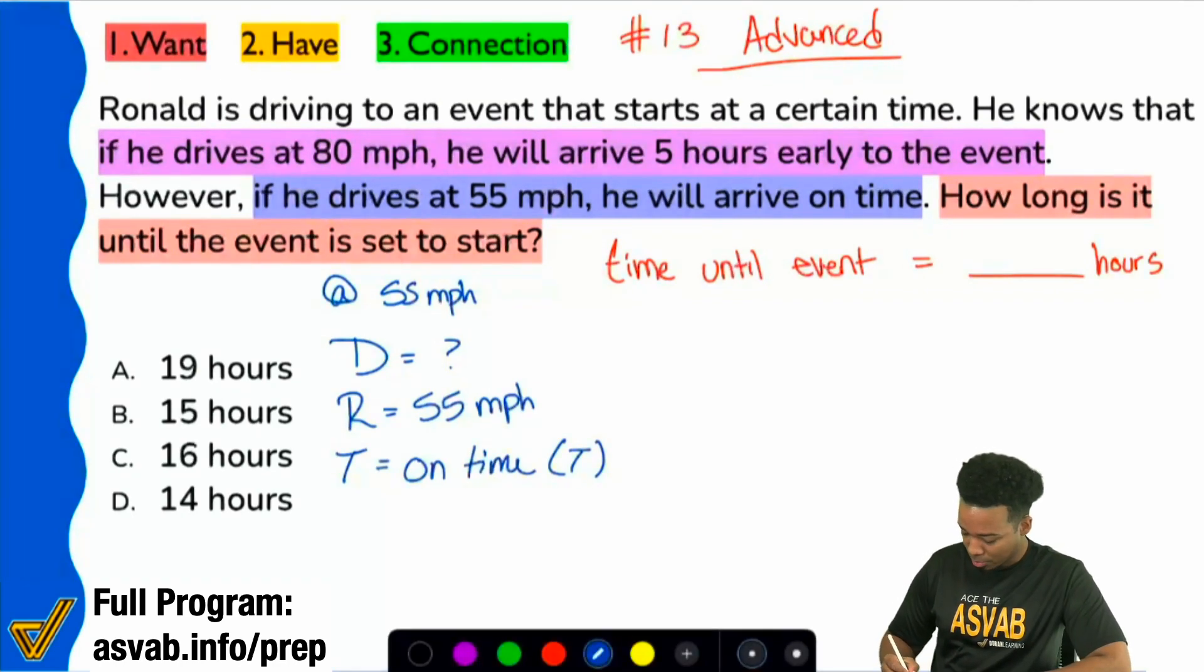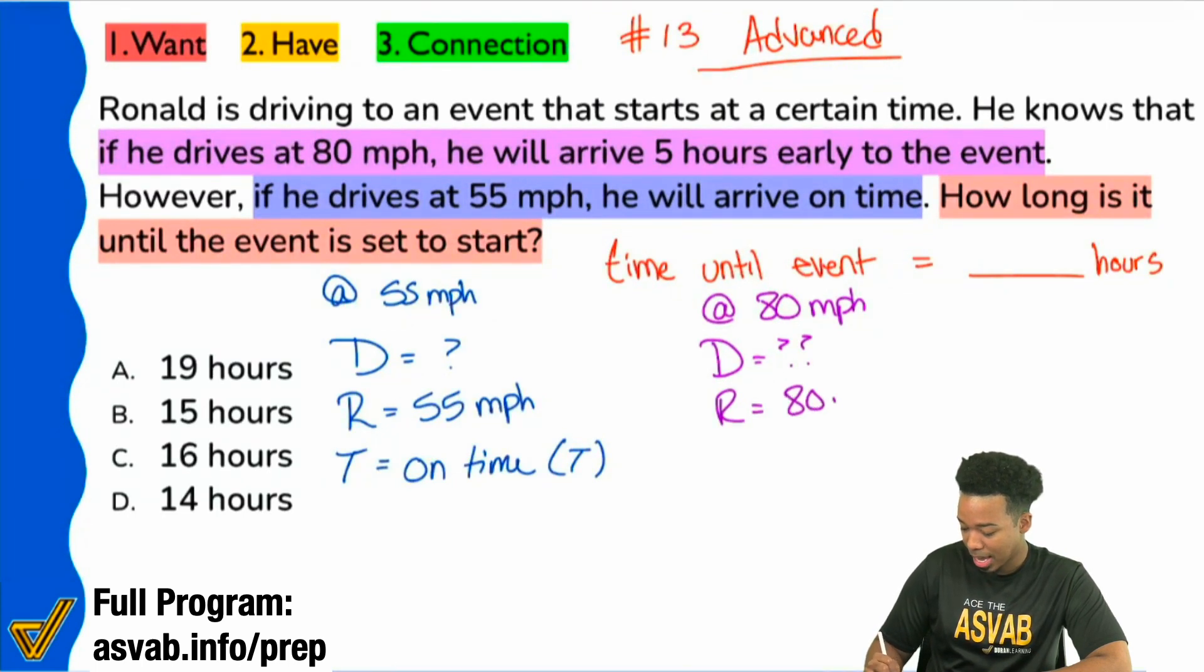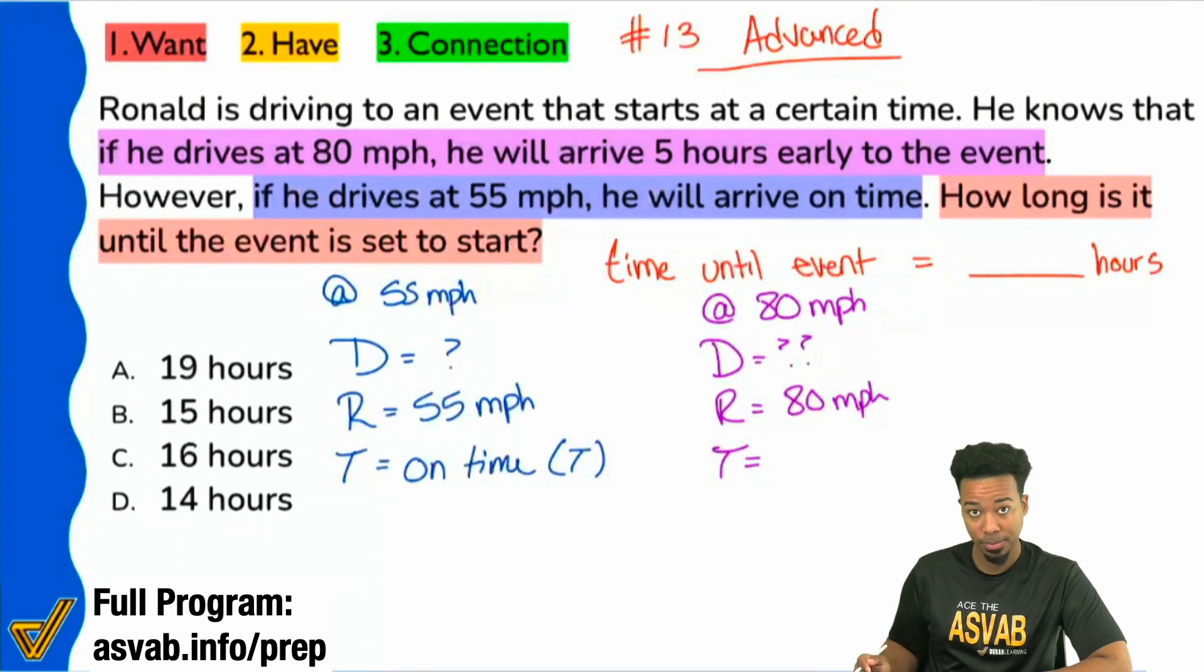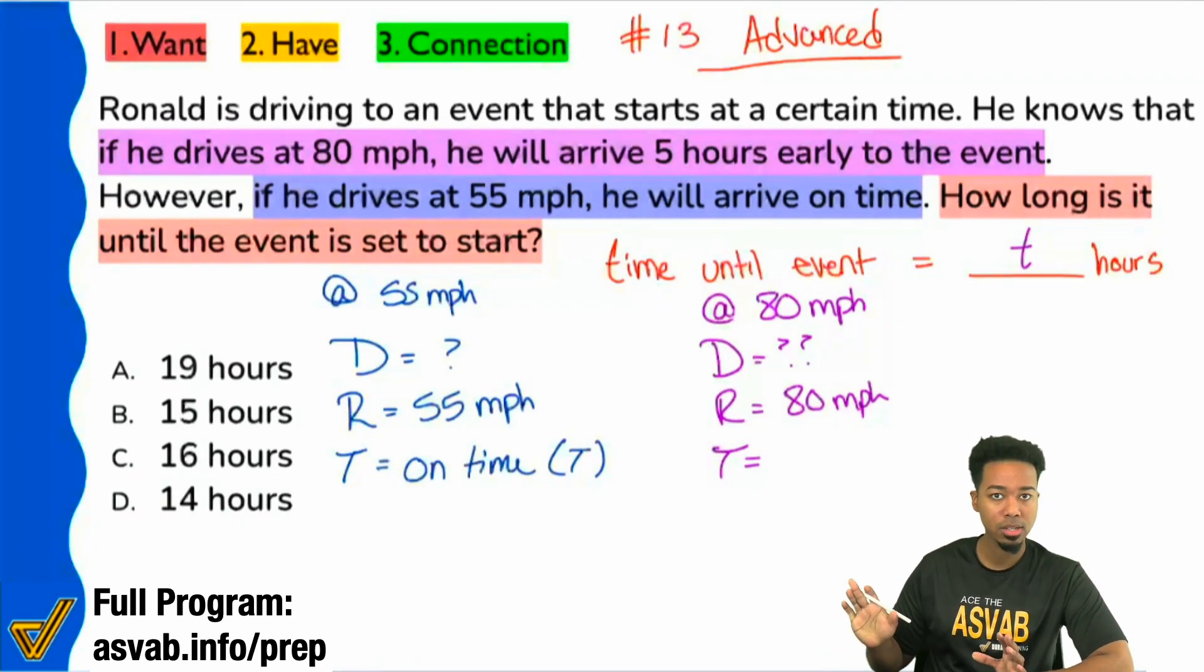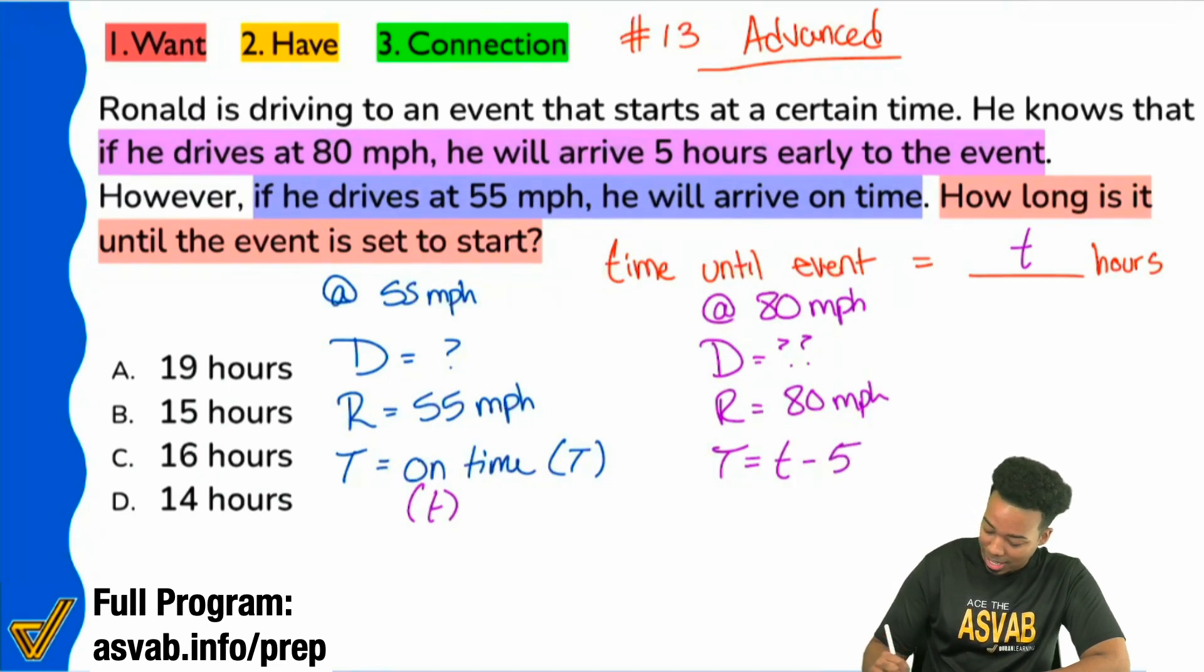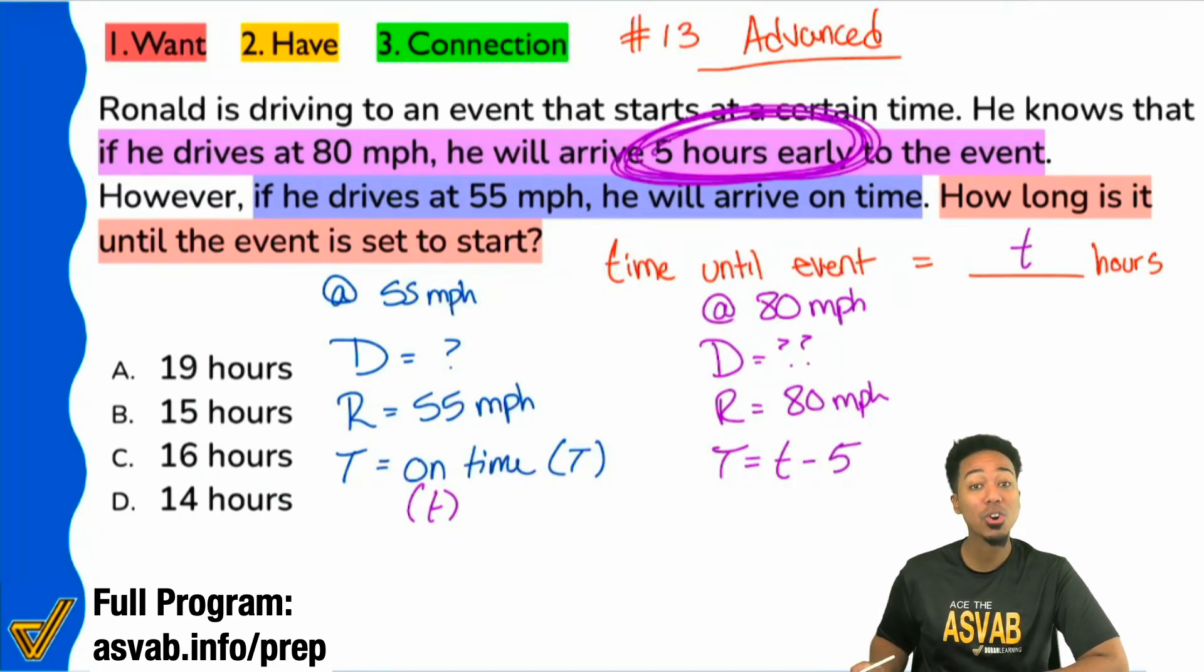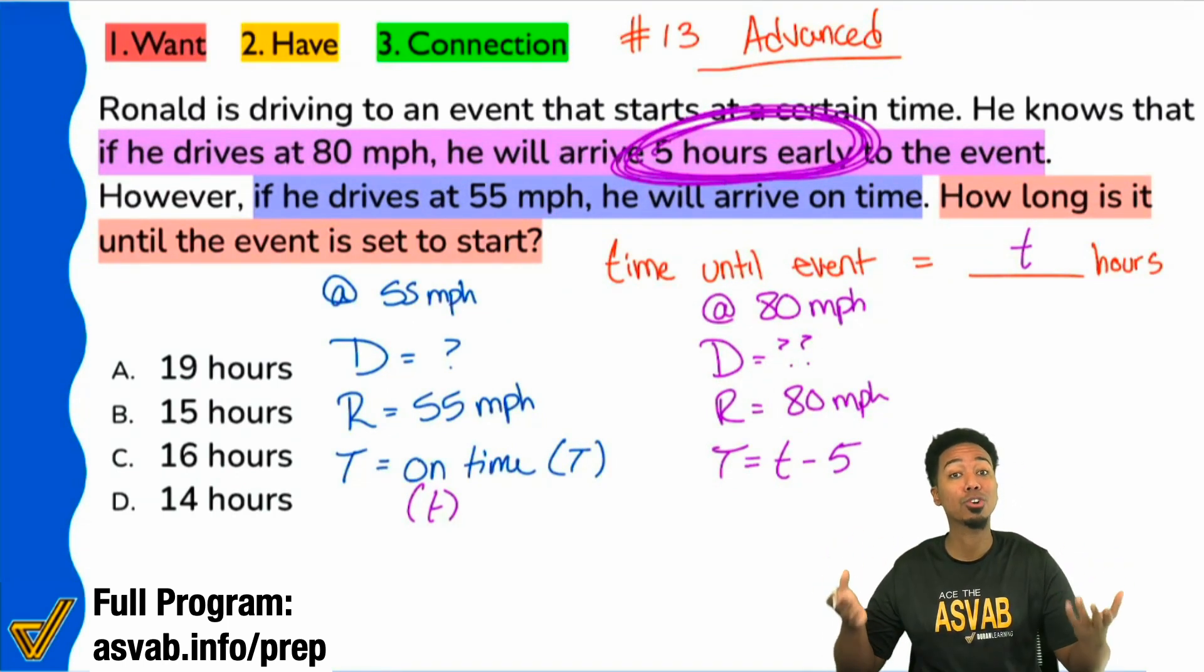Now in this case in purple, let me change my tone here. We see here that we have the rate at 80 miles per hour. We see that the distance, we don't know, the rate is going to be 80 miles per hour. But we know that the time here, five hours early. So if we're going to represent the time until the event starts with just T, it starts T hours from now. It would have been on time here. But here it would be T minus five, because five hours early. So however long it would have taken you before, we take away five hours. That's what five hours early means.